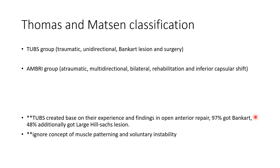Thomas and Matsen classification groups instability into TUBS and AMBRI. TUBS stands for Traumatic, Unidirectional, Bankart lesion present, and often requires Surgery. AMBRI is Atraumatic, Multidirectional, usually involves Bilateral shoulders, Rehabilitation is the main therapy, and surgically an Inferior capsular shift. TUBS was created based on experience during open anterior repair, noting 97% had Bankart lesion and 48% had large Hill-Sachs lesion. This classification ignores the concept of muscle patterning and voluntary instability.